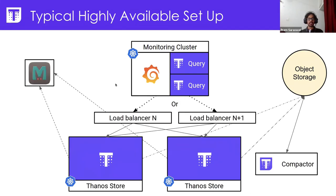To query data from object storage, there's a third component: the Thanos store gateway. It sits between Thanos querier and object storage. Whenever Thanos query requires some data, it sends a query to the Thanos store — just like it sends a query to the sidecar — and Thanos store gets that data from object storage and returns it. There's also the Thanos compactor, a standalone background component that regularly compacts and downsamples all blocks in object storage.